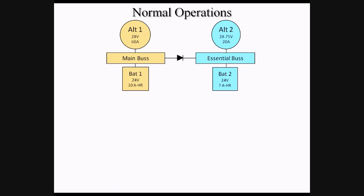So in normal system operations, we have Alt-1 powering the main bus and all associated items, while Alt-2 powers the essential bus and all associated items. While Alt-1 is capable of powering the essential bus, the higher voltage of Alt-2 pushes back against any attempt from Alt-1 to do so.